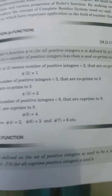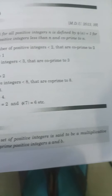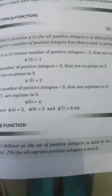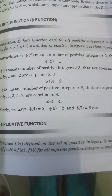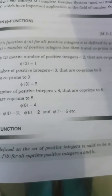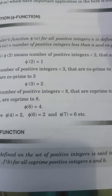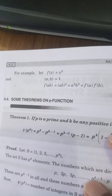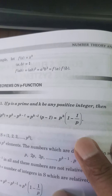A function f(x) defined on the set of positive integers is said to be a multiplicative function if f(ab) = f(a) · f(b) for all co-prime positive integers a and b. For example, let f(x) = x². If gcd(a,b) = 1, then f(ab) = (ab)² = a²b² = f(a) · f(b).